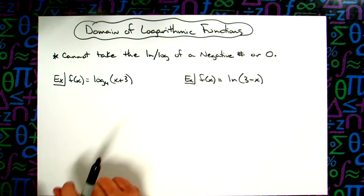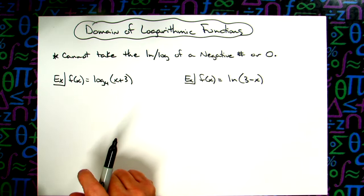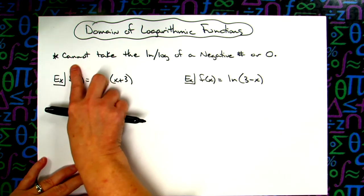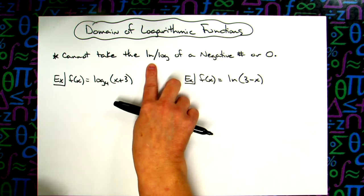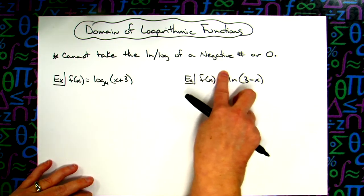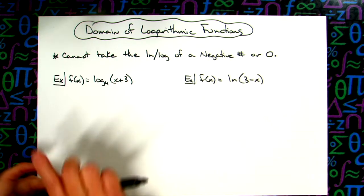In this video, we're going to go through two quick examples of finding the domain of a logarithmic function. The main thing you have to remember here is that you cannot take the log, natural log, or the LLG log, either one of those, of a negative number or of zero.